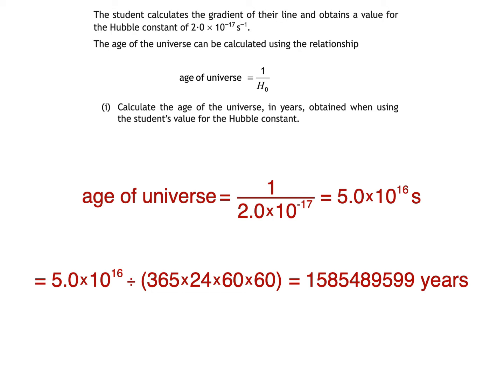Anyway, we get the answer of 1 5 8 5 4 8 9 5 9 9. Sounds like a phone number. Years, or, to two significant figures, 1.6 times 10 to the power of 9 years. And don't worry, you'll also get the same answer if you do use 365.25 as the number of days in a year.